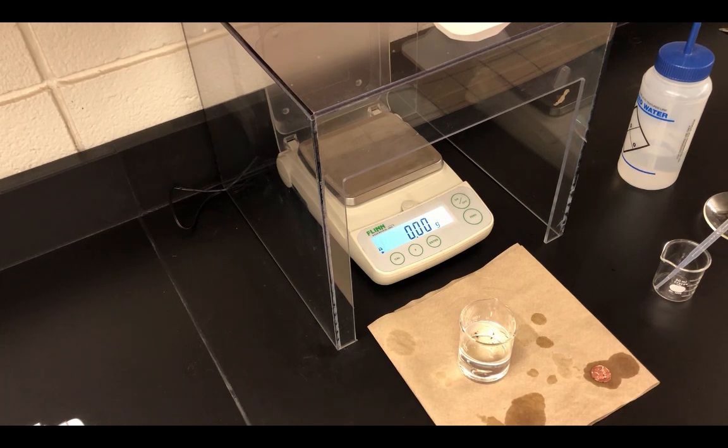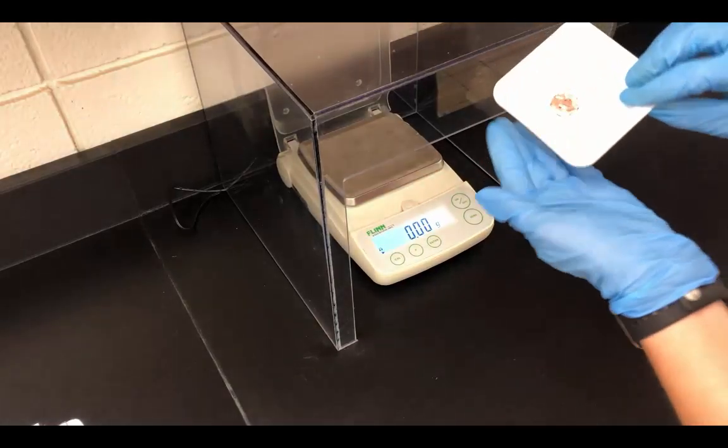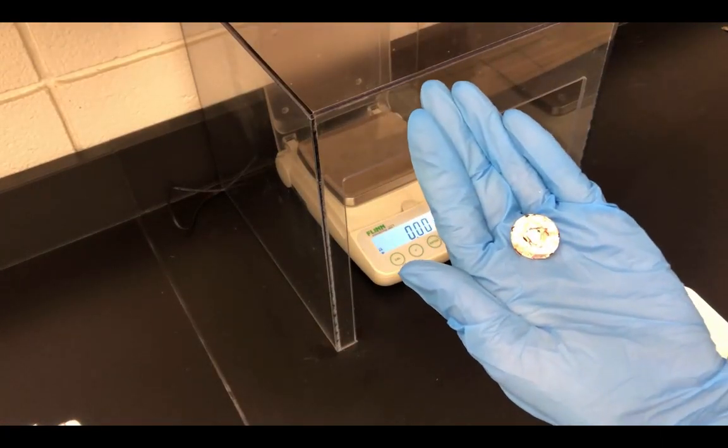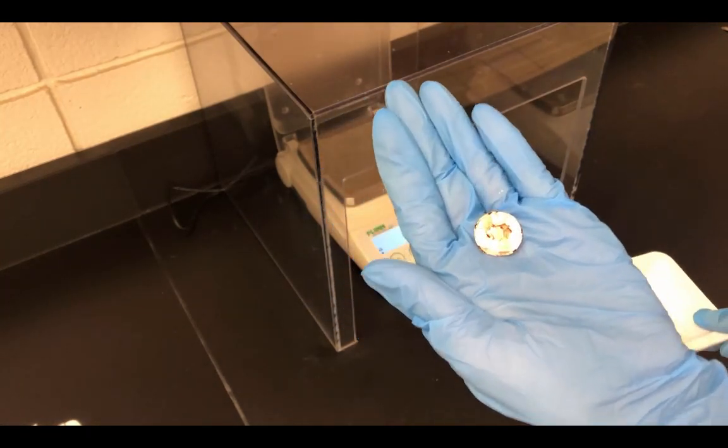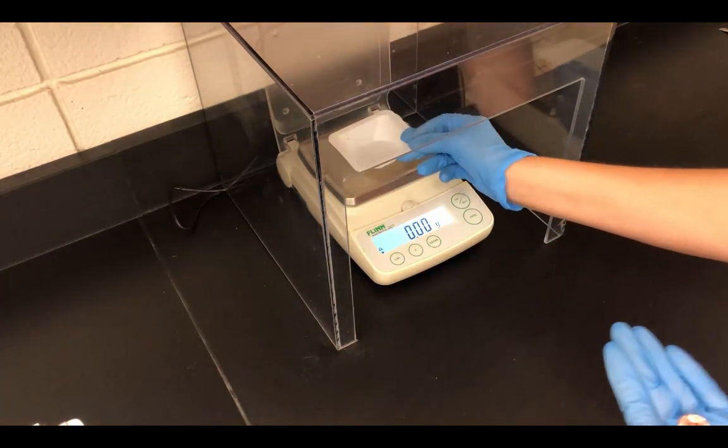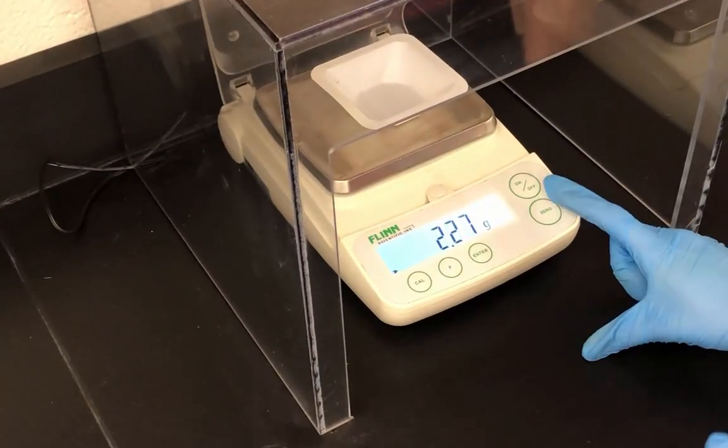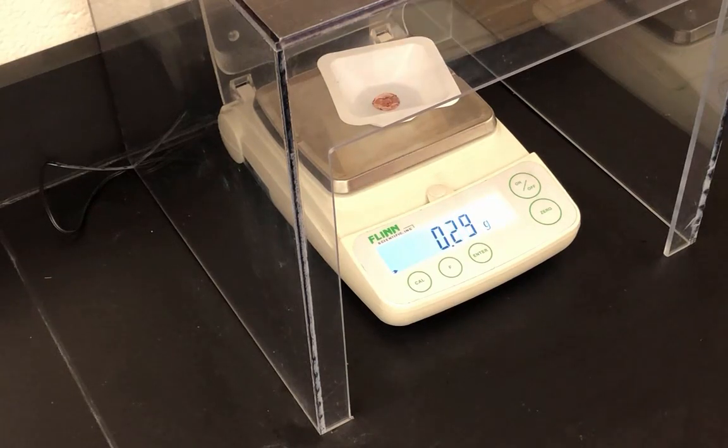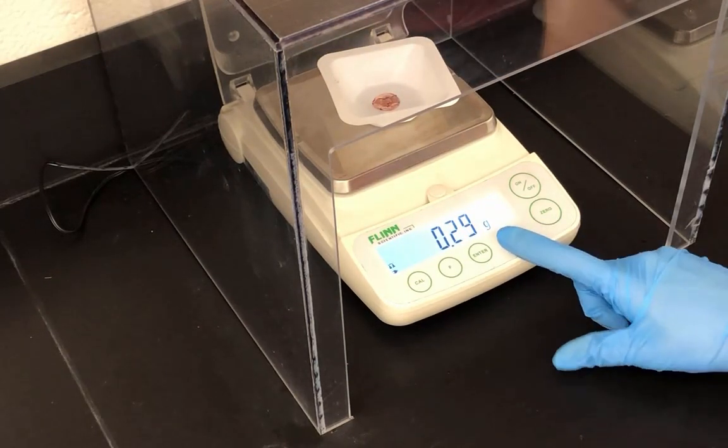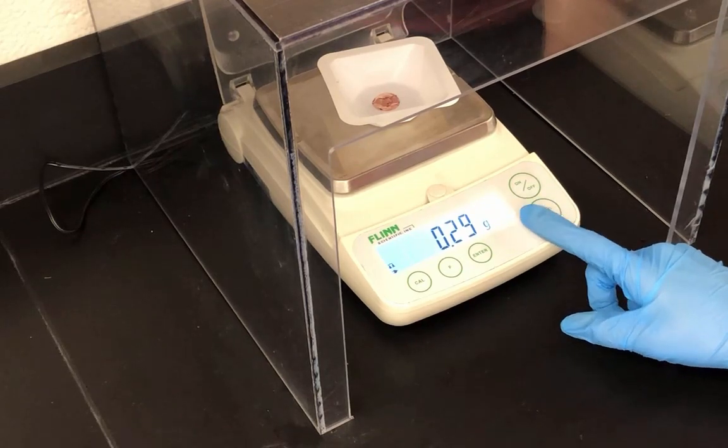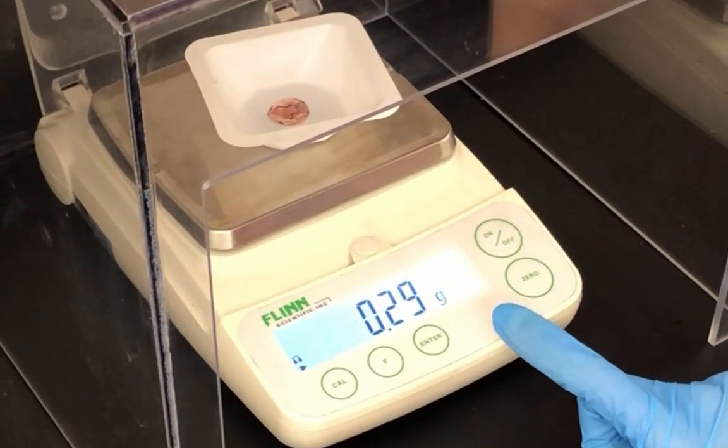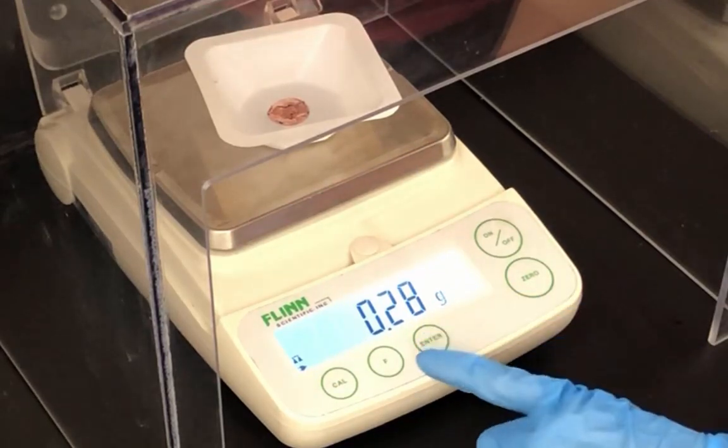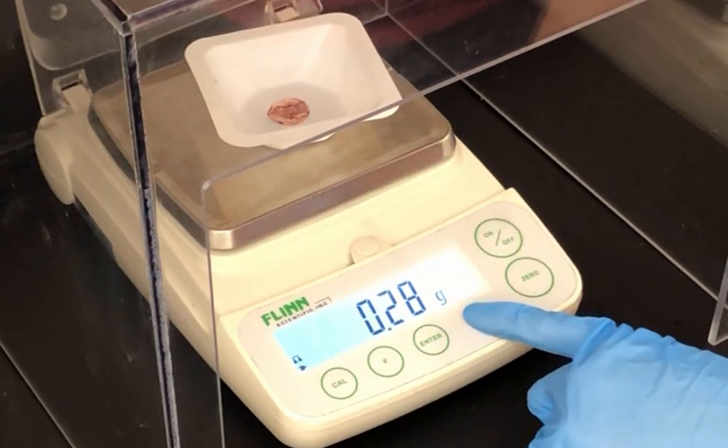We've let our copper shell dry. We're going to take the final mass of this copper shell, then we'll be ready to do calculations. I'll put the weigh boat on the scale, zero it, and add the copper shell. After the reading stabilizes, the mass of the copper shell is 0.28 grams.